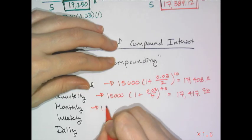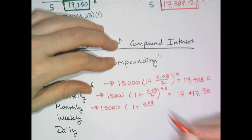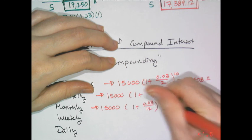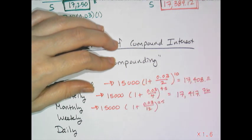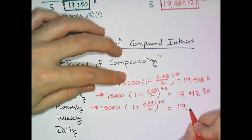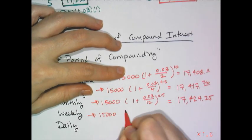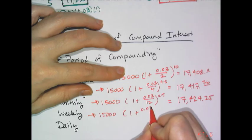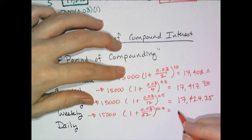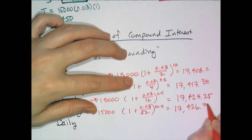Monthly: take $15,000, divide 0.03 by 12, and calculate 12 times 5 — that's 60 times. Result: $17,424.25. Weekly is 1 plus 0.03 divided by 52, raised to the 52 times 5 power, which gives $17,426.76.